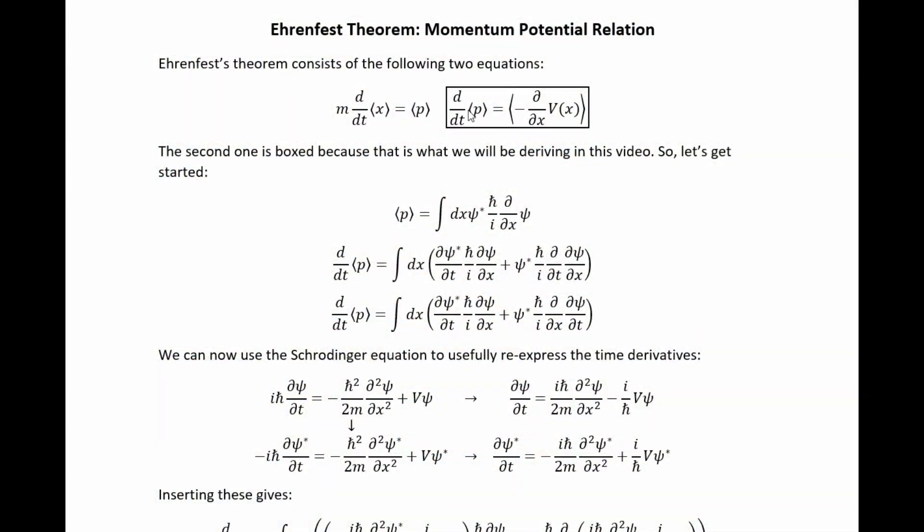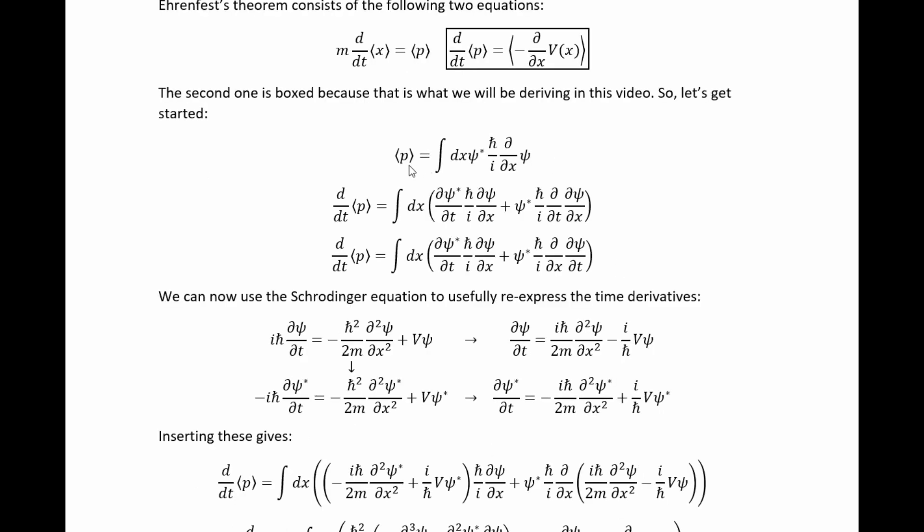Ehrenfest's theorem consists of the following two equations. We're going to prove this one in the box in this video by directly calculating the quantity on the left, and we'll find that its value is that on the right. We remember that the expectation value of the momentum can be expressed in integral form because this particular value there,